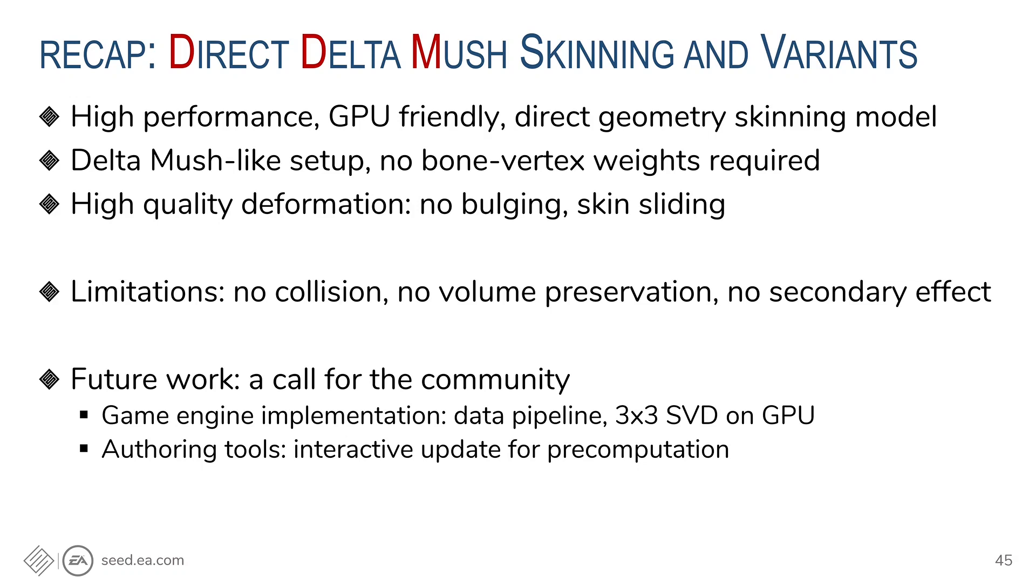And to recap, we have made Delta mush be a direct skinning model, which is suitable for high-performance graphics. We also did some extensions to further improve the deformation quality compared to the original Delta mush model. And especially, our model is the first direct method with no bulging and support skin sliding. However, we have not solved many of other problems such as collision, volume preservation, or secondary deformation effect. But we hope that this work can provide theoretical ground and inspiration for the community to further explore in this direction, especially for those who already use and love Delta mush.